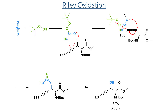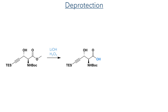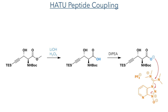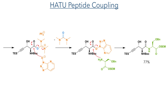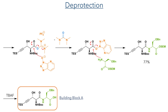Both of these isomers were required for the initial route scouting. In the next step, the methyl ester was cleaved using lithium hydroxide and hydrogen peroxide, and the newly revealed carboxylic acid was subject to a peptide coupling using HATU. The acid is first deprotonated and attacks the coupling reagent eliminating hydroxybenzotriazole. This can then attack as a nucleophile eliminating a urea byproduct and forming an activated ester. The free amine of the coupling partner reacts with this ester to form the product in a 77% yield. The SEM protecting group was then cleaved using TBAF to produce building block A.